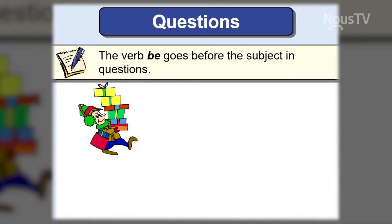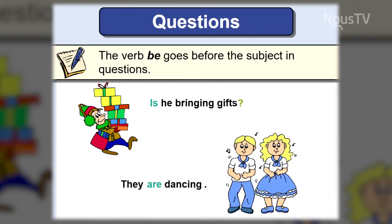If we form questions with the verb to be, we place the verb to be before the subject. He is bringing gifts — can we make it a question? Is he bringing gifts? And we put a question mark at the end. They are dancing — we make it a question: Are they dancing? And we put a question mark at the end.